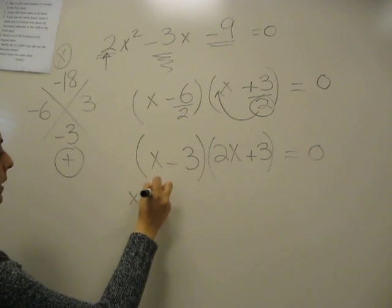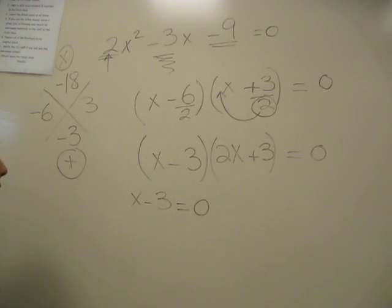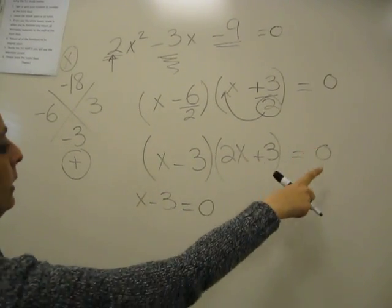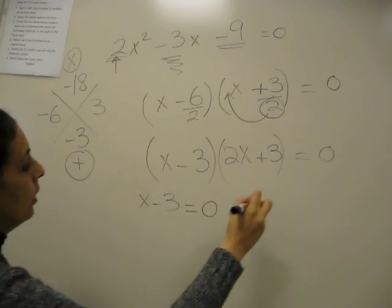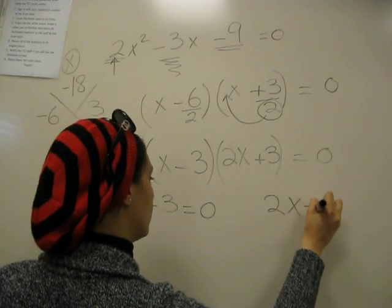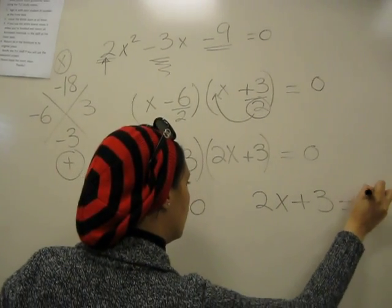So we're going to say that X minus 3 equals 0, because if two things are multiplied, it gives you 0. One of the multiples has to be 0. Or 2X plus 3 equals 0.